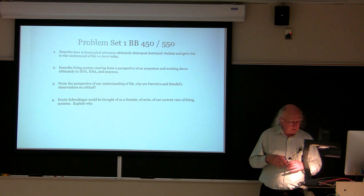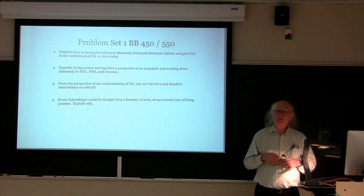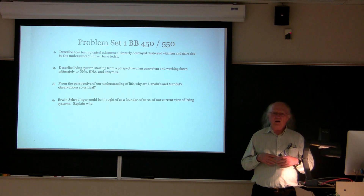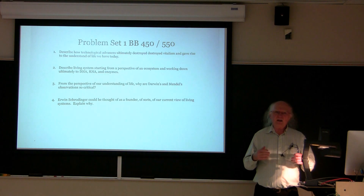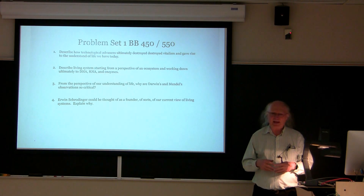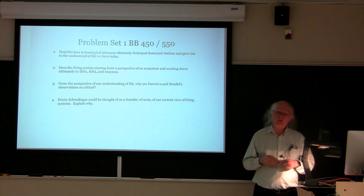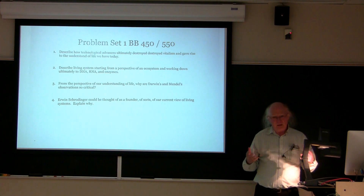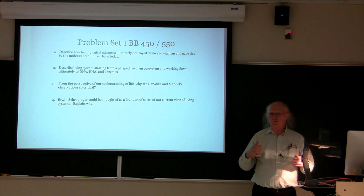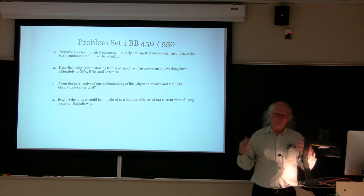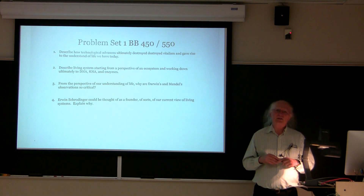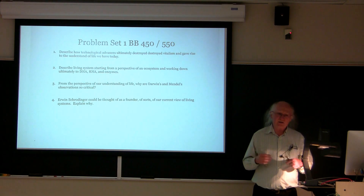The third question asks, from the perspective of our understanding of life, why are Darwin's and Mendel's observations so critical? I'll start with Mendel. Mendel was the first person who really understood how transmission of traits and inheritance occurred through his work with peas. By recognizing that the present-day organism is related to the organism that gave rise to it — pea plants only give rise to other pea plants. But when you looked closer at individual traits, whether shriveled or colored or whatever, one could actually determine the basis by which those traits were transmitted. Mendel's work was lost for many years before it was rediscovered.